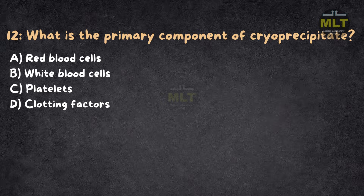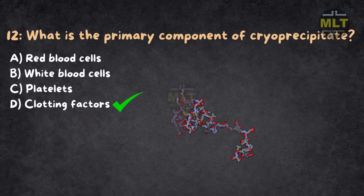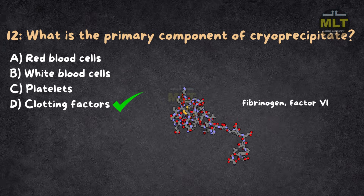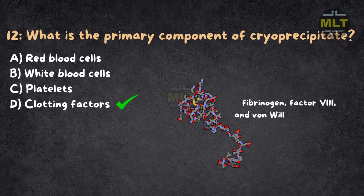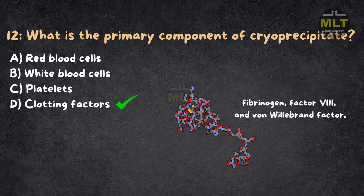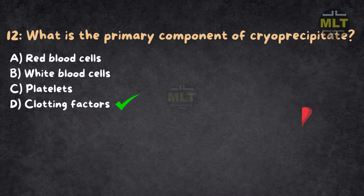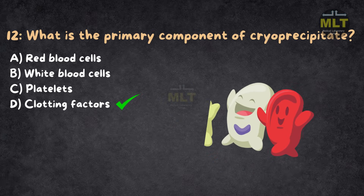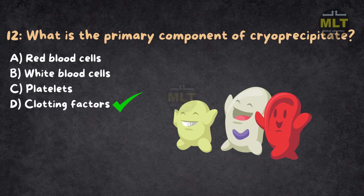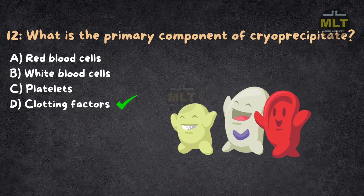Explanation: Cryoprecipitate is rich in clotting factors, including fibrinogen, factor VIII, and von Willebrand factor, and is used to treat bleeding disorders. Red blood cells, white blood cells, and platelets are not the primary components of cryoprecipitate.